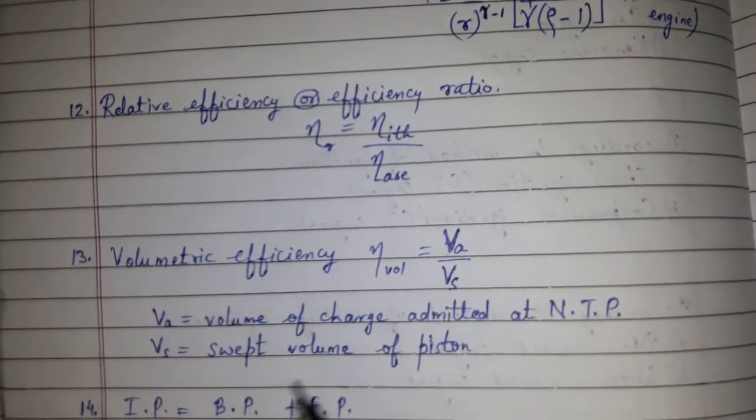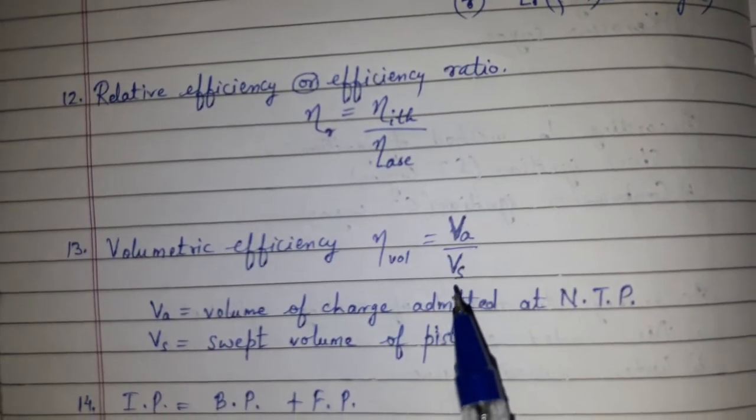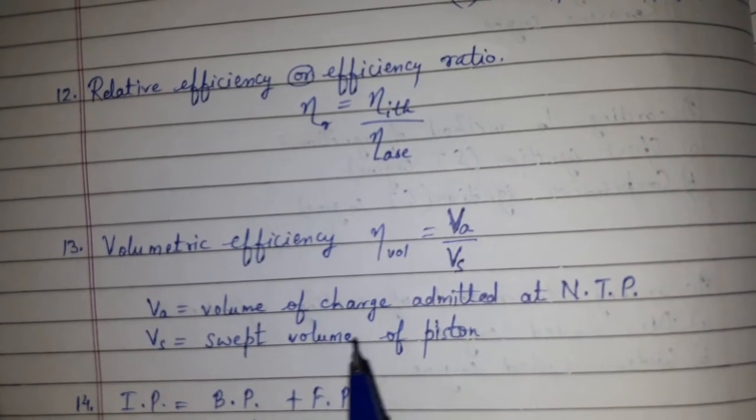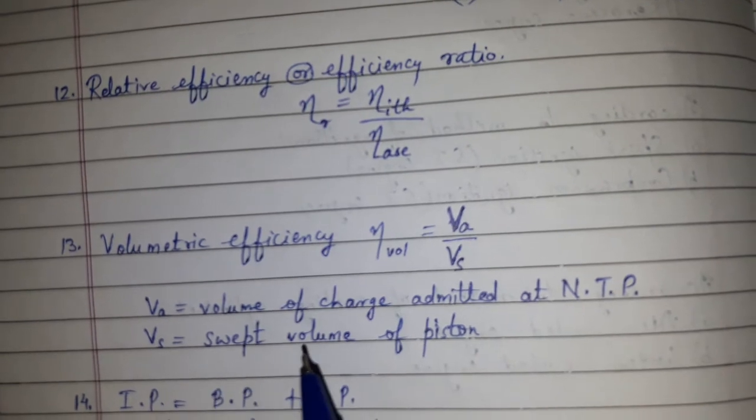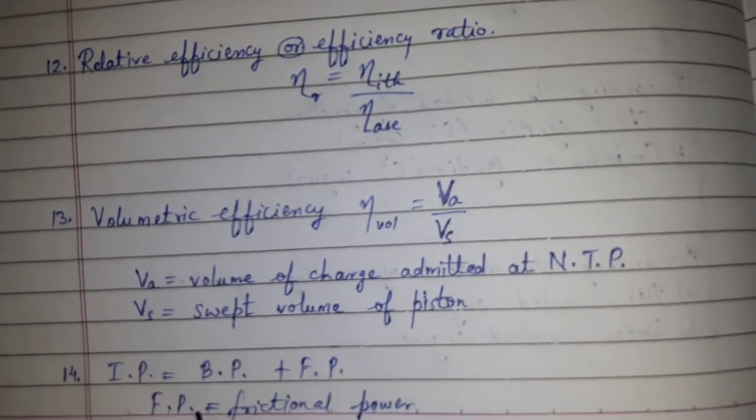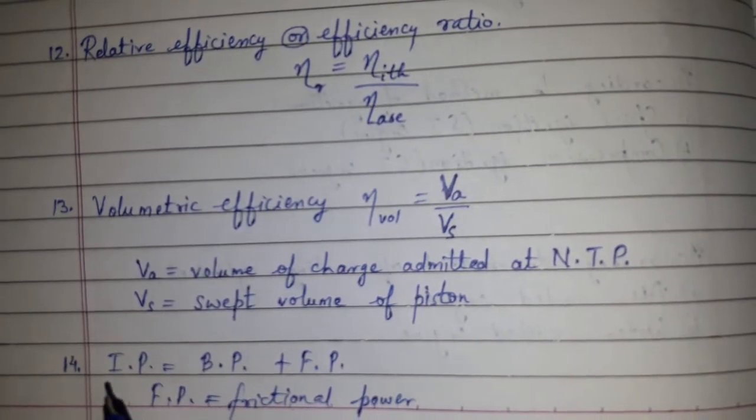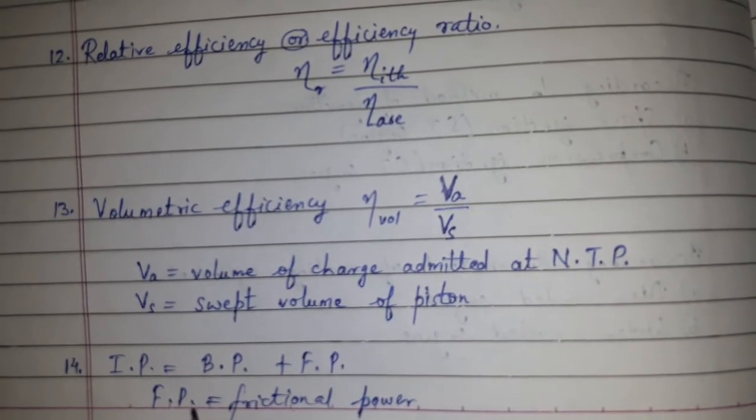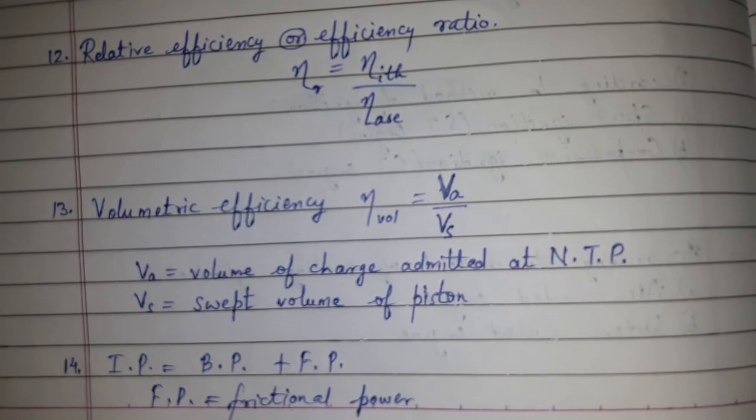Volumetric efficiency Va upon Vs where Va is the volume of the charge admitted at NTP and Vs is the swept volume of the piston. And the final formula is IP is equal to BP plus FP where FP is the frictional power.